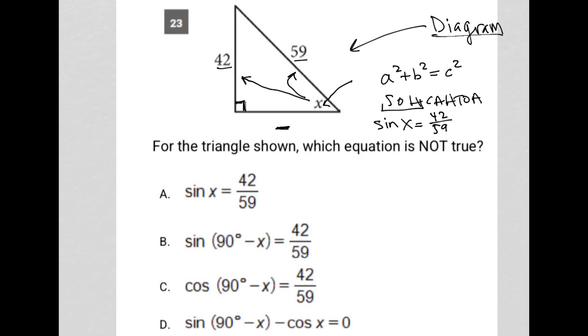The question says, for the triangle shown, which equation is not true? Well, choice A definitely is true. I just did that: sine X equals 42 over 59, so cross that out.